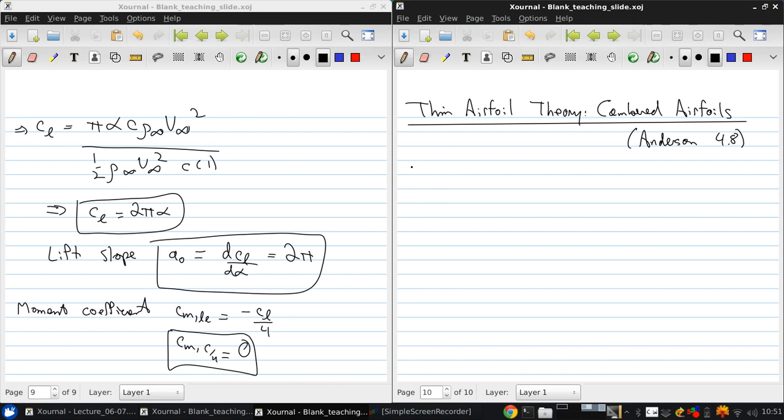So recall our fundamental equation: 1 over 2 pi integral from 0 to C of gamma x minus C dz equals v infinity alpha minus dz dx. Now, for a cambered airfoil, dz dx is generally not 0.